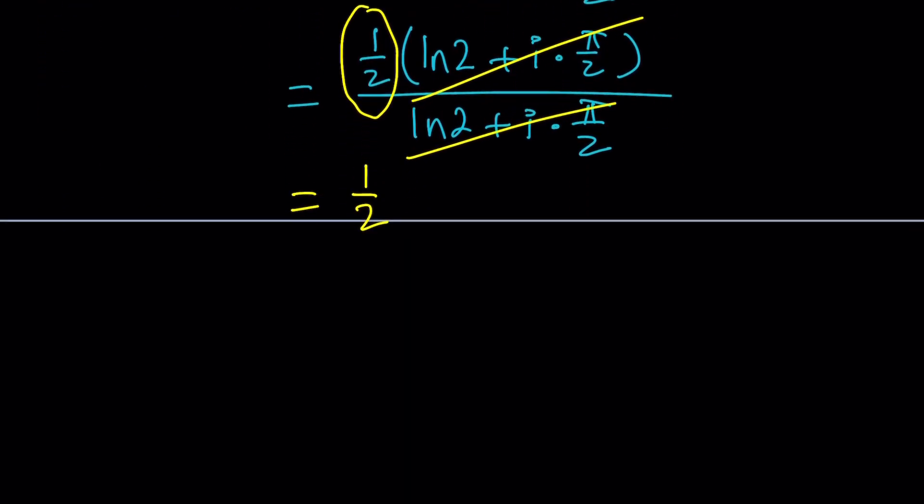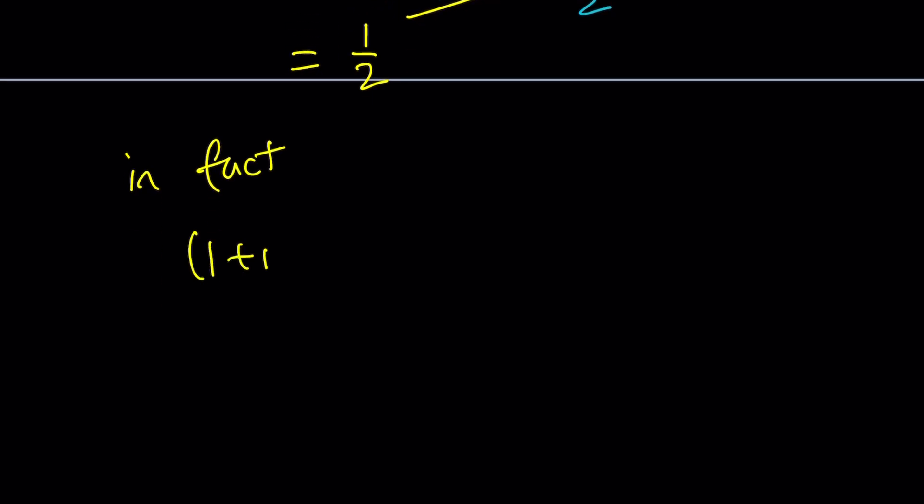In fact, what happens here is 1 plus i squared is 1 plus i squared plus 2i. i squared is negative 1. So these two cancel out, leaving us with 2i. So I can kind of replace 2i with 1 plus i squared. Let's do that.